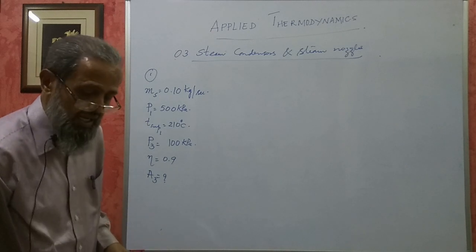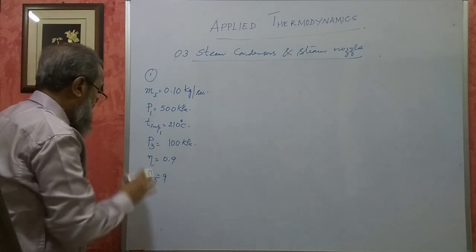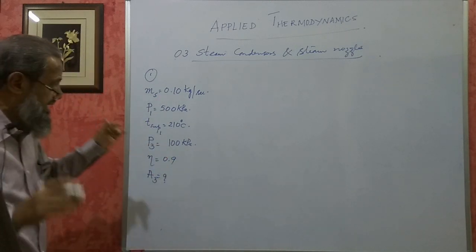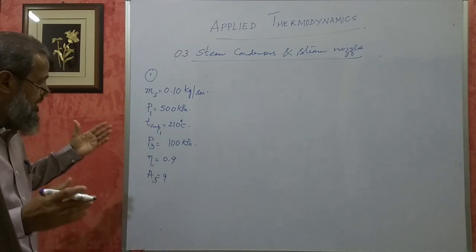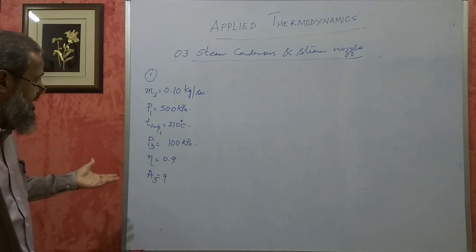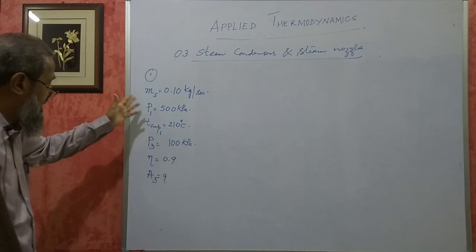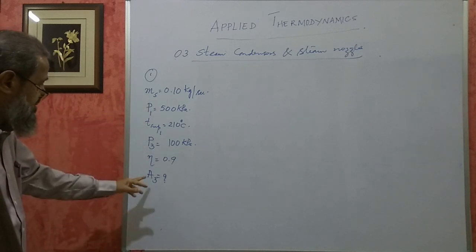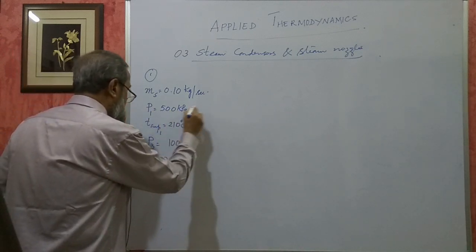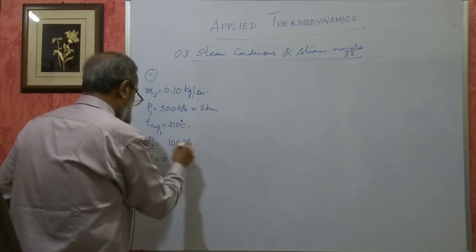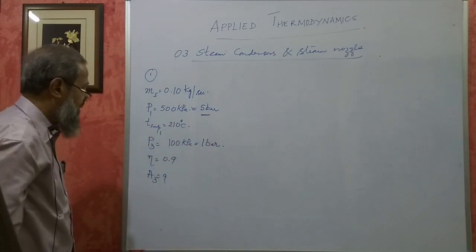This is a problem on a nozzle. What type of nozzle it is, is not given — it may be any type. It does not make any difference whether it is a convergent, divergent, or convergent-divergent nozzle. The pressures should be converted into bars first: P1 is 500 kilopascal, that is 5 bar; the exit pressure is 100 kilopascal, that is 1 bar.